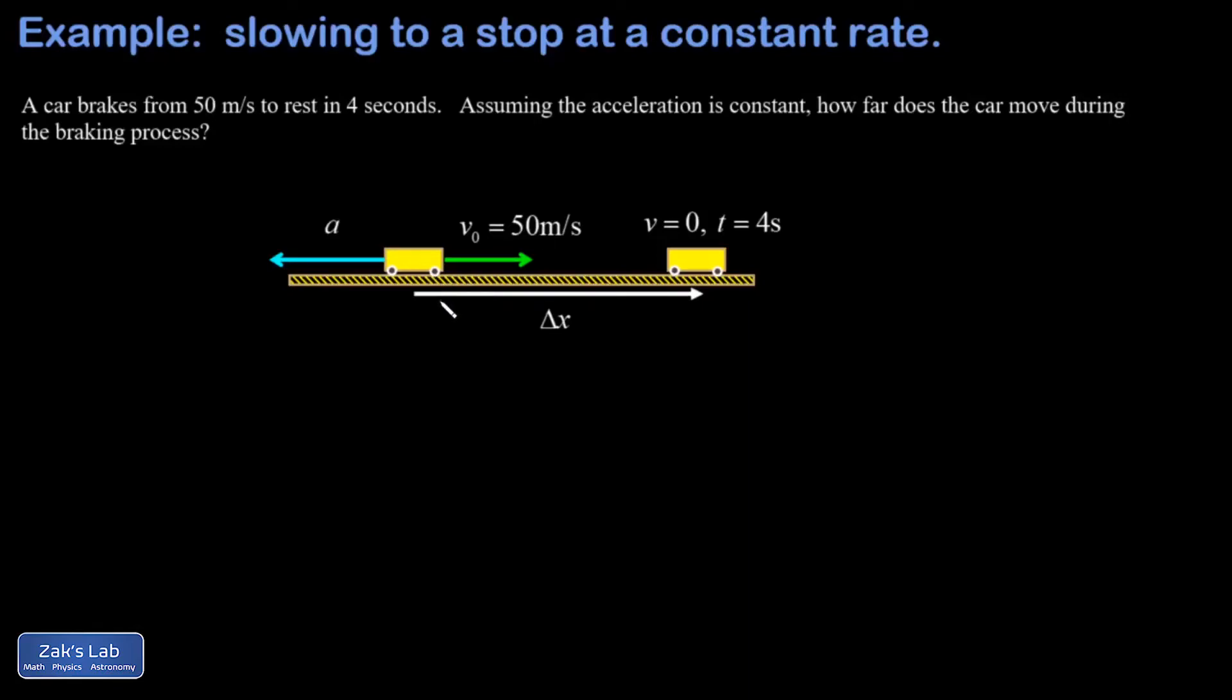In this problem we start with a car moving in the positive direction at 50 meters per second, then the driver applies the brakes. This is a fact that's so convenient to remember: if you have acceleration in the opposite direction of the velocity, the object is going to be slowing down. If you have acceleration in the same direction as velocity, the object is speeding up. I knew I had to draw a pointing the opposite direction of v because I was told the thing was braking, so it's slowing down. So I'm assuming a constant acceleration here.